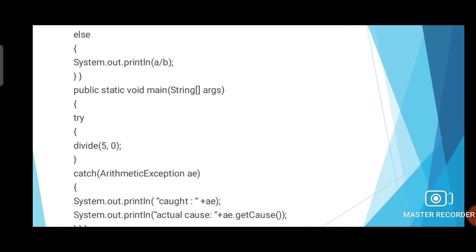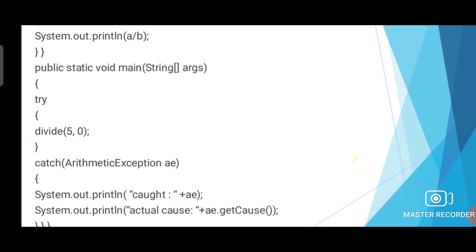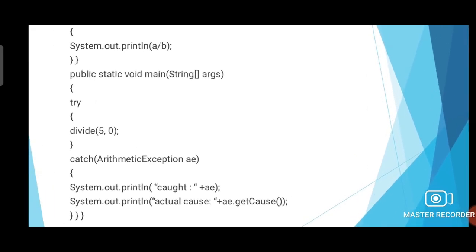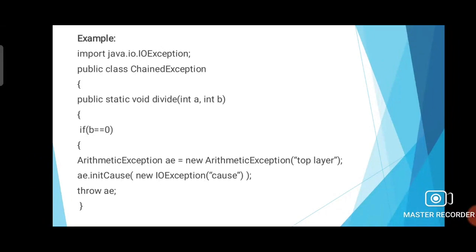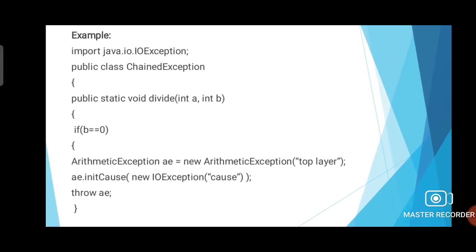If b is not zero, then the division operation will be performed and the system will return the result of a divided by b. Inside the main function, we are calling the divide method under the try block, supplying parameter values for a and b as 5 and 0. So this will definitely lead to an exception situation. The ArithmeticException will be triggered, and we have previously defined that its cause is the IOException — that is, ae.initCause(new IOException()).